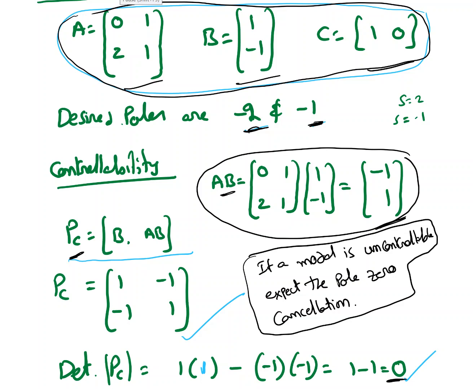Here is the next example. We are given a equal to the matrix [0, 1; 2, 1], b equal to [1; -1], c equal to [1, 0]. He wants us to design a state feedback system with desired poles of minus 2 and minus 1.